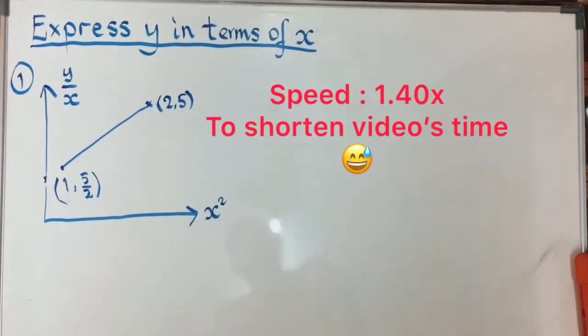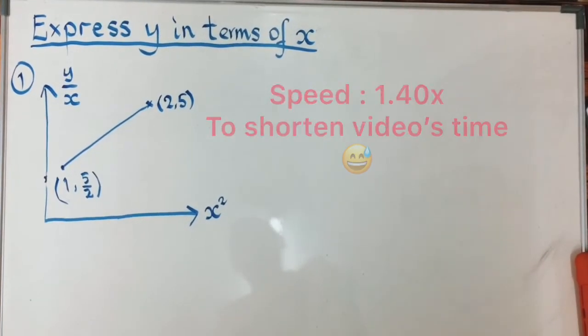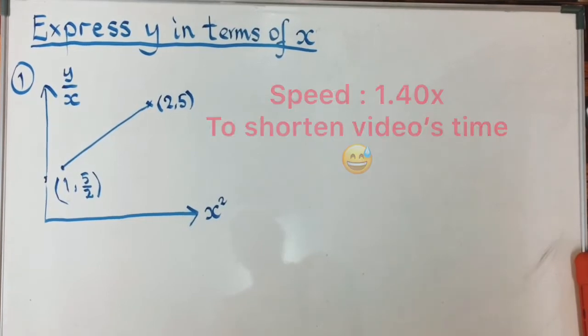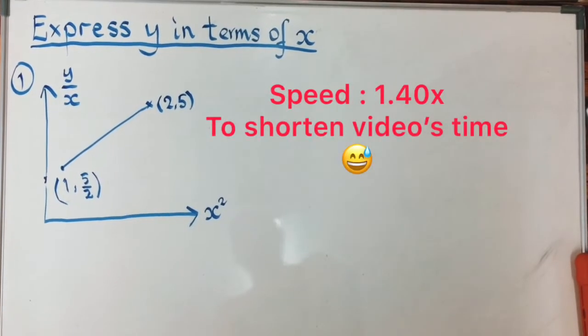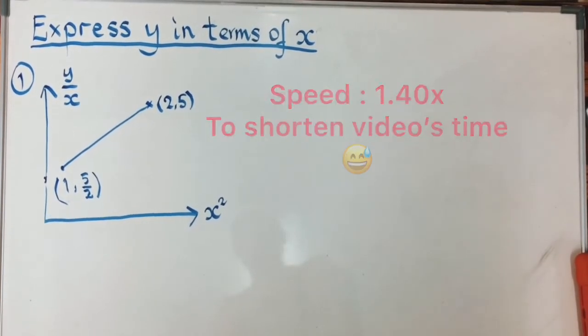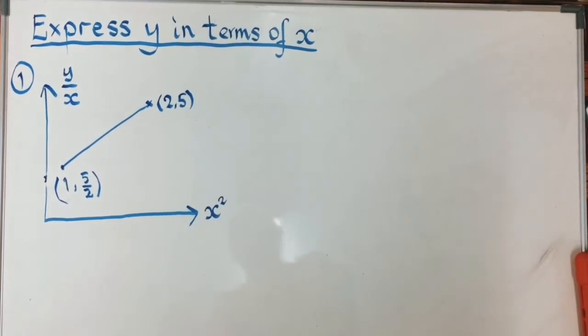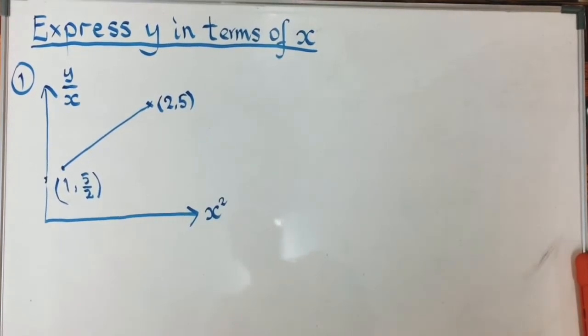Assalamualaikum and hi everyone. For today's lesson we are going to express y in terms of x. Imagine in your vertical axis you have y over x, and in your horizontal axis you have x squared. There are two points: one point is (1, 5/2) and the other point is (2, 5).